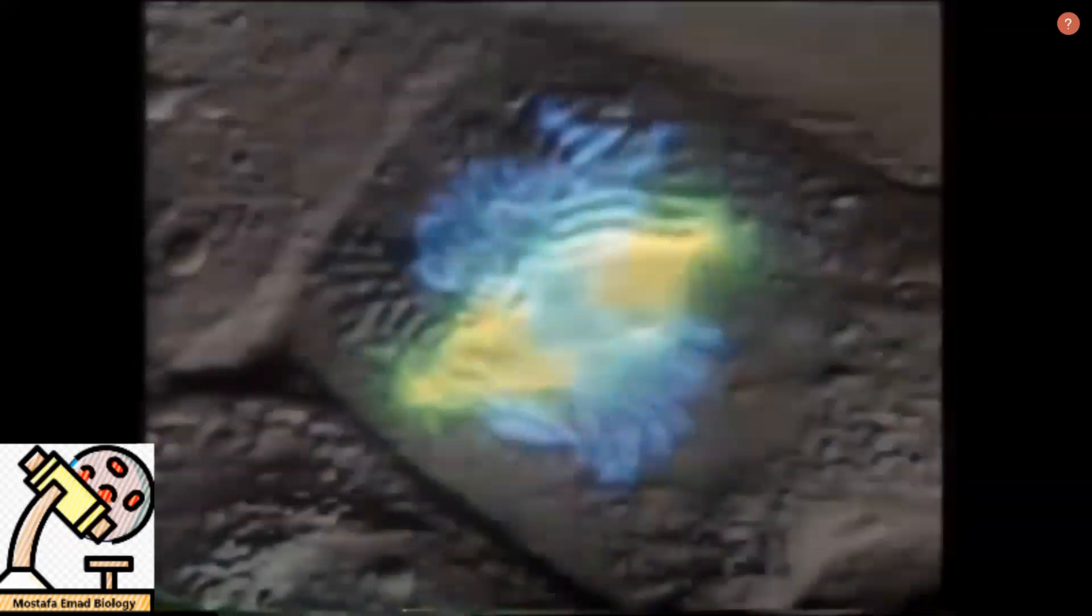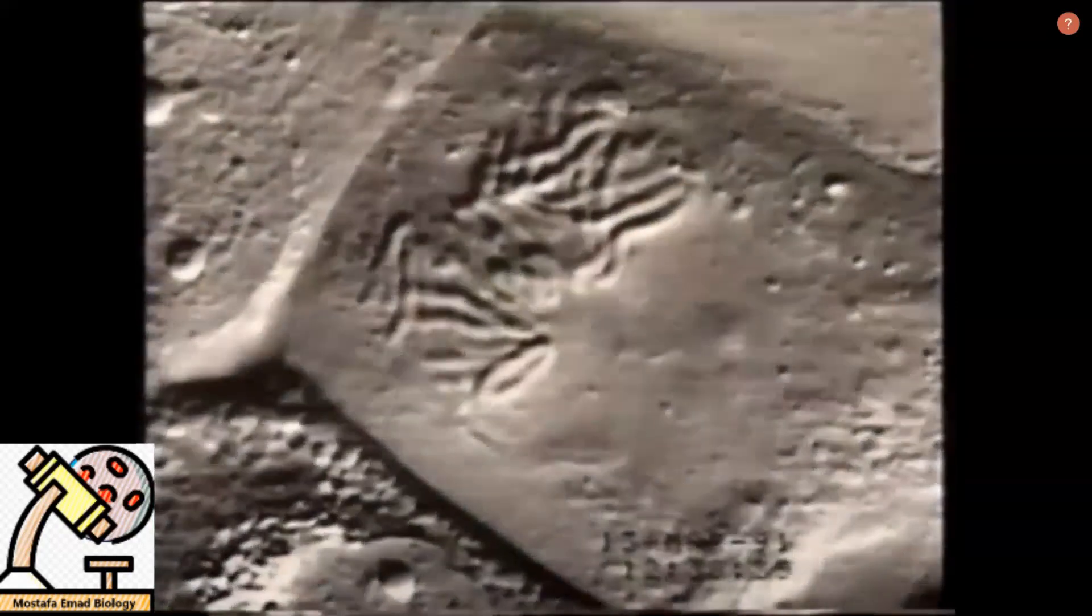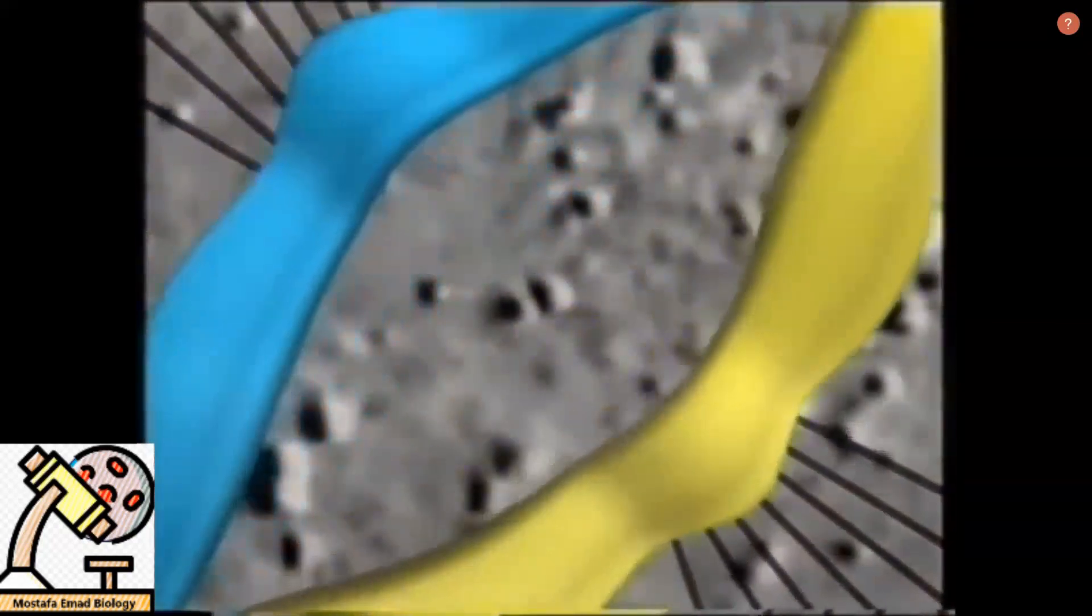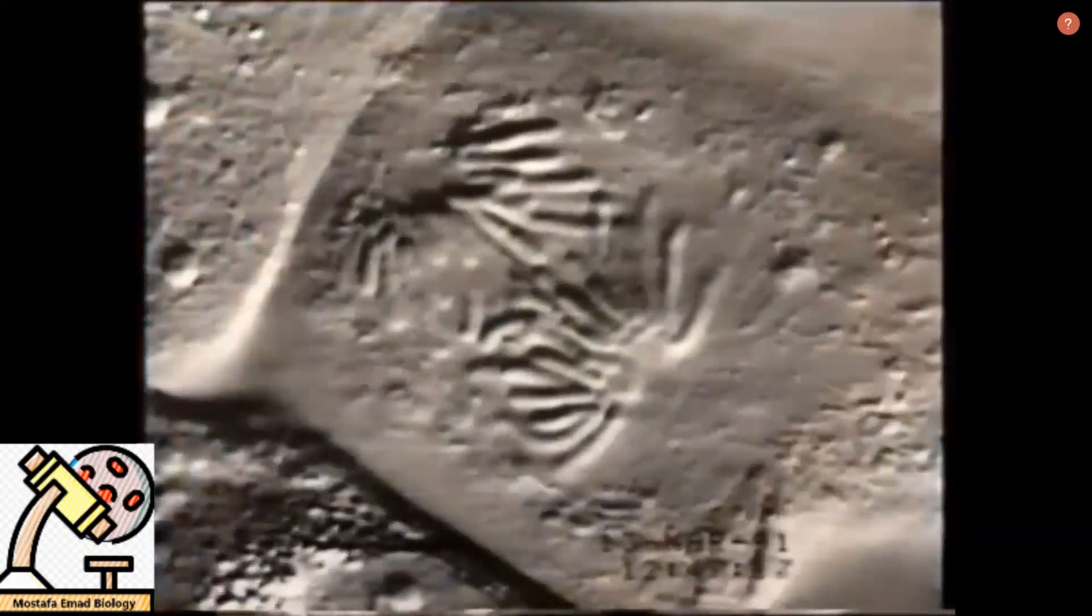In the third stage, or anaphase, the chromatids will dramatically separate and proceed to the poles, following the network of microtubules laid down by the centrioles.